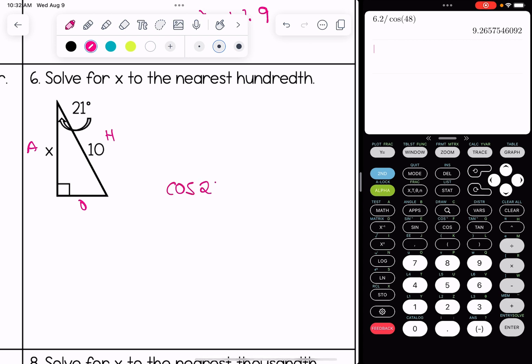The cosine of 21 is equal to the adjacent over the hypotenuse. Cross multiply, and we're going to go to our calculator: 10 times cosine 21. To the nearest hundredth, I get 9.34.